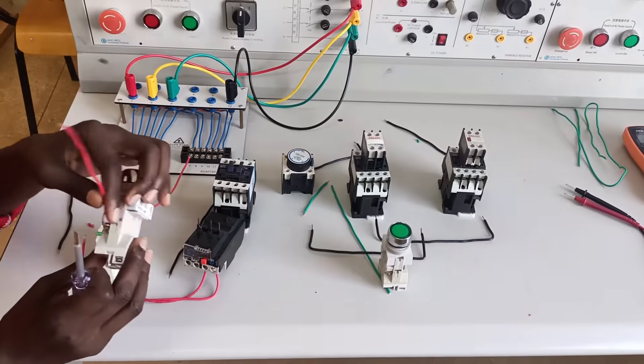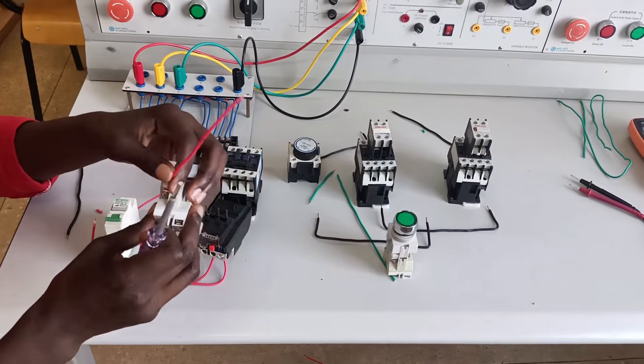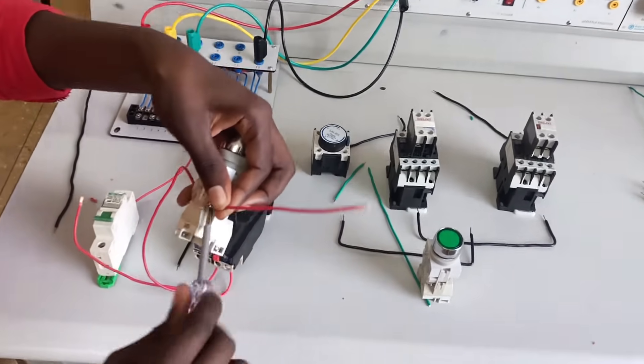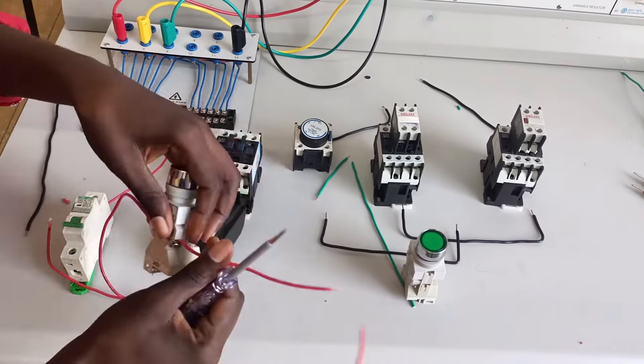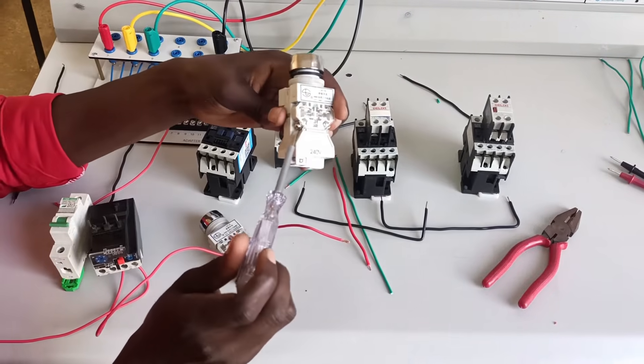Then pin 2 of the normally closed push button, that's the stop push button, will go to pin 3 of the start push button, the one you see in green.